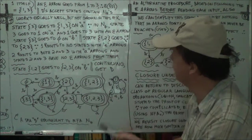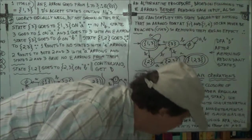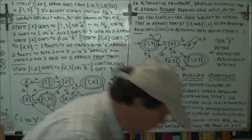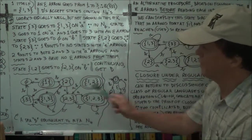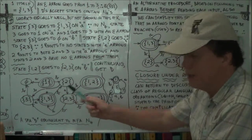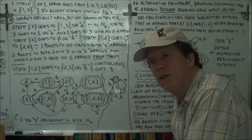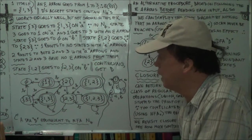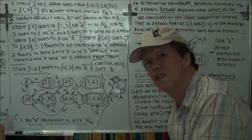Now, we can actually simplify this diagram because some of these states here are redundant, are not used. They're not used in the sense they have no transitions to them. Now, if a state has no transition to it, it can never be used.